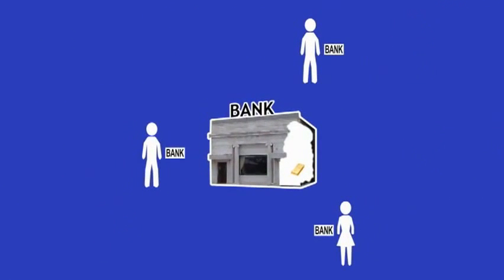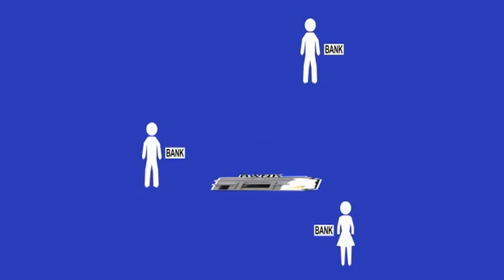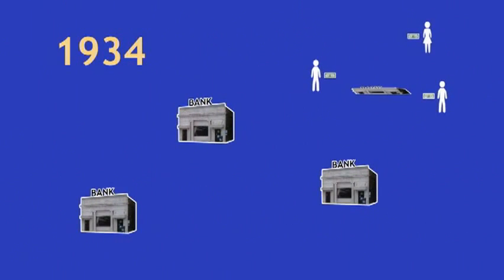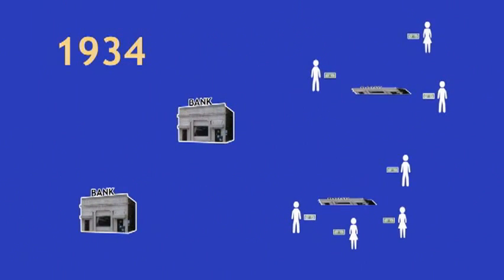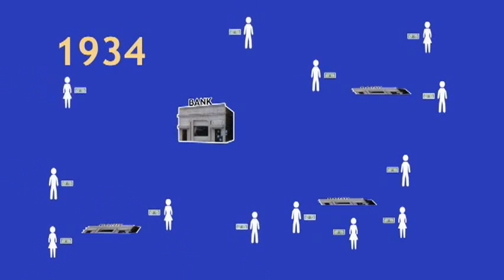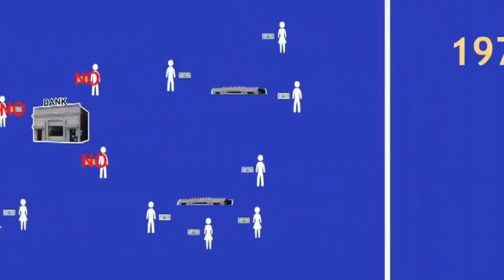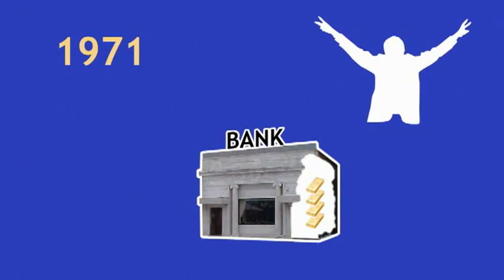If people caught on that there wasn't enough gold to redeem their receipts, they would all go to the bank at once — a bank run — and the bank would fail because it was caught without enough gold to back up its receipts. In 1934, in an attempt to prevent further bank failures, a series of banking reforms slowly took away people's ability to trade their paper money in for gold or silver. In 1971, Richard Nixon removed the last vestiges of this convertibility. Today, our money can no longer be redeemed for gold or silver.